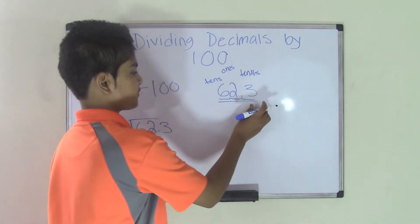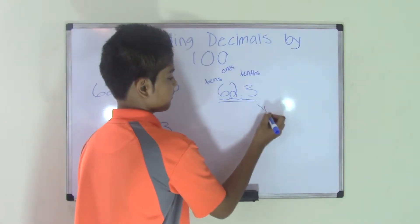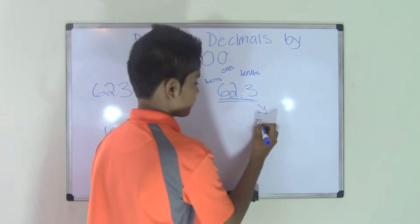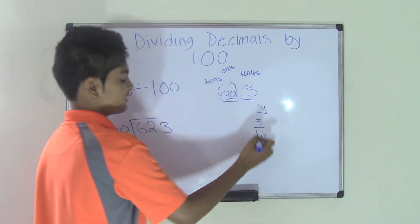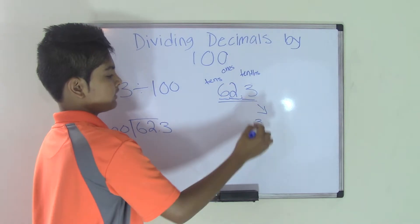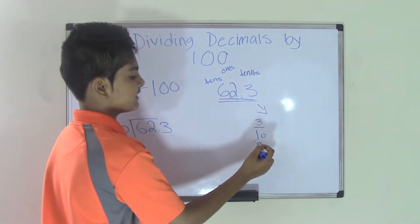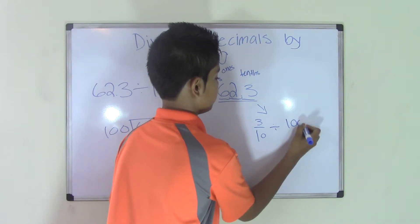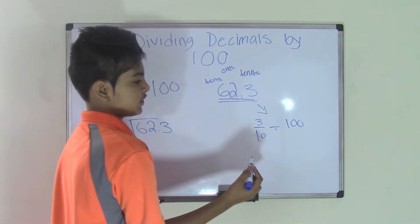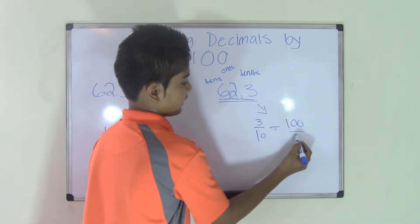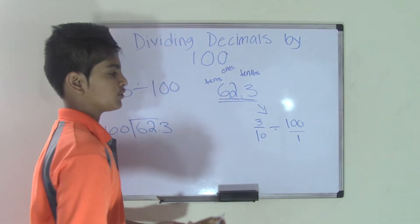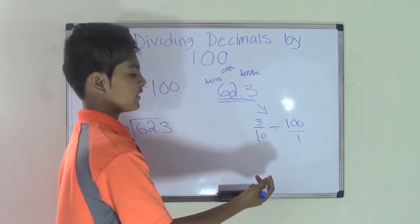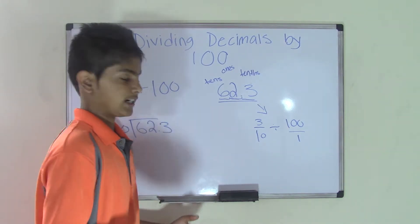So now you have to take the first number, which is 3, and write it in its place value. Since 3 is a fraction, we'll have to write 3 over 10. Why am I writing 3 over 10? Because 3 is in the tenths, so we write 10 under it. Now we have to divide this by 100. Since 100 doesn't have a denominator under it, we'll just write 1 over 100. Now we're going to use the reciprocal method, which is flipping the second fraction over and then multiplying the two fractions.